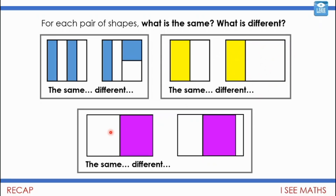And on the bottom example, what's the same and what's different? Well, I've got the same size parts and the same size whole — it's just that the part is in a different place. But it's easy to see with the purple one on the left that it's a half, and this is also a half of this rectangle that is purple here as well.